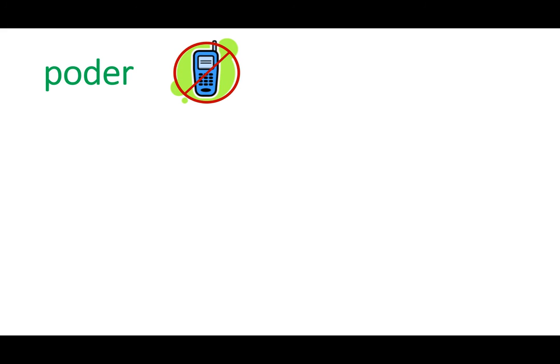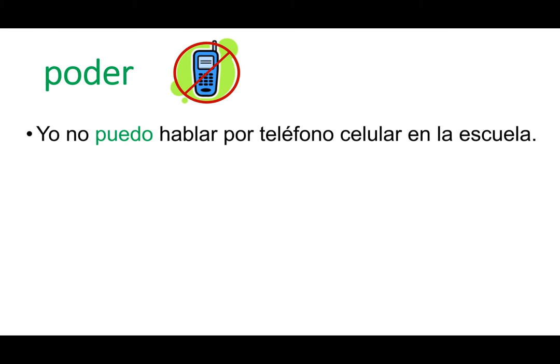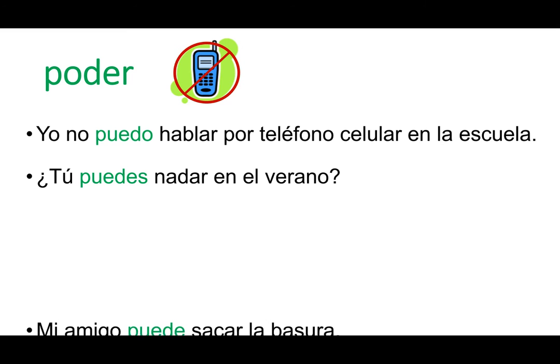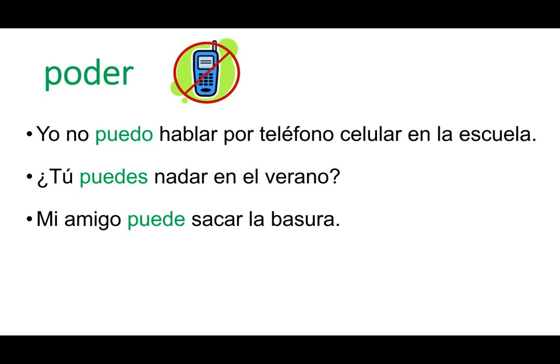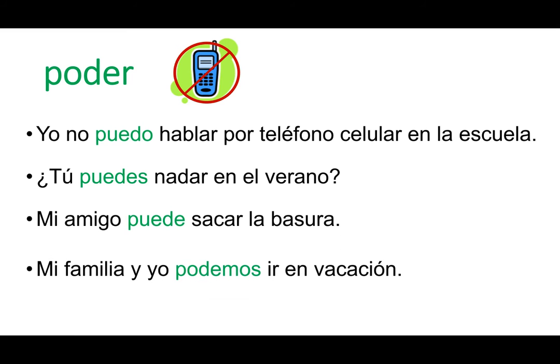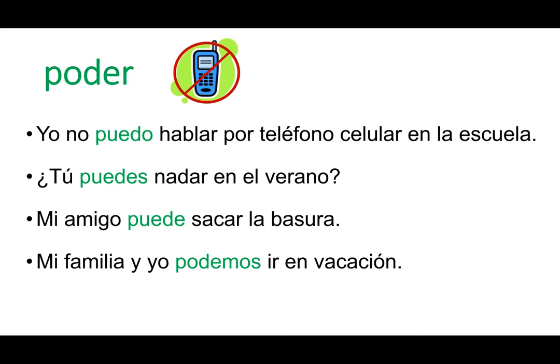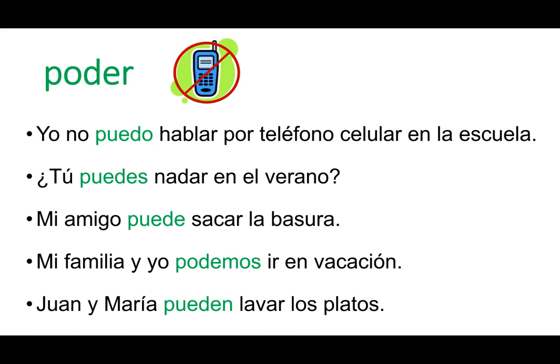So the verb, poder — let's look at it together now. Yo no puedo hablar por teléfono celular en la clase. ¿Tú puedes nadar en el verano? Mi amigo puede sacar la basura. Mi familia y yo podemos ir en vacación. And María y Juan pueden lavar los platos. I think it'll be easier looking at the verb here and seeing the full infinitive verb at the top.